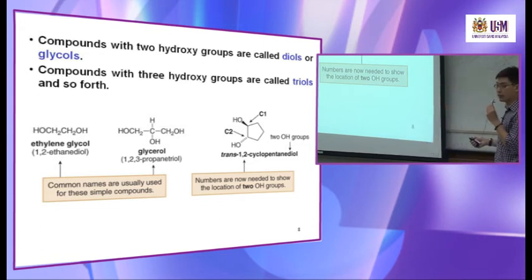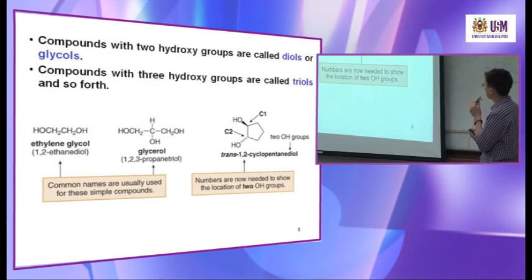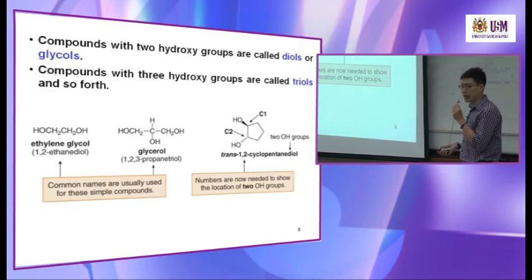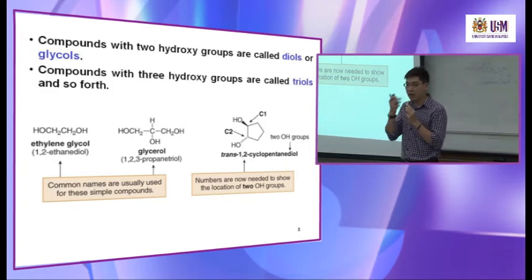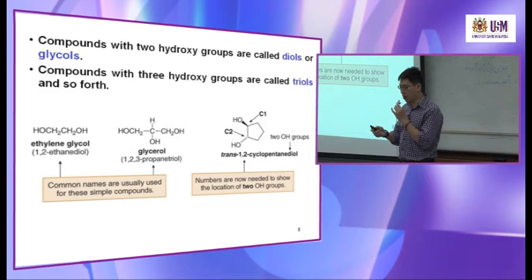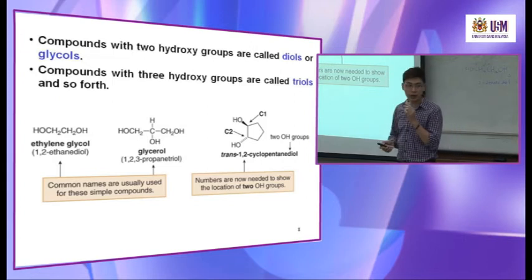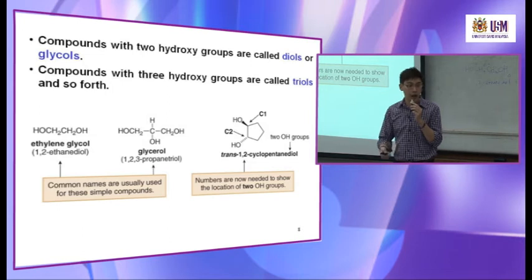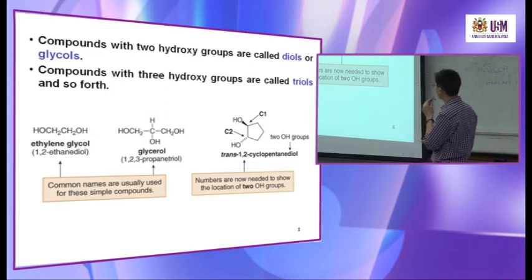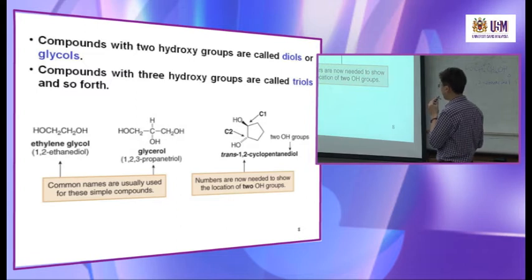This is a cyclopentane group. In cyclopentane, the bonds cannot twist, so it's possible to have substituents pointing up and down — similar to an alkene. So it's a trans diol. In this case, trans OH groups, named trans-1,2-cyclopentanediol.